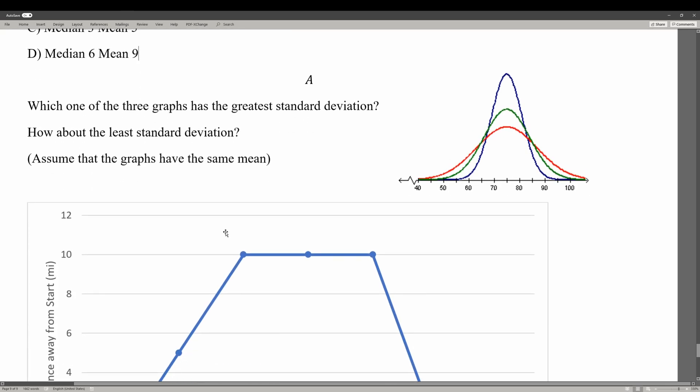Next we're going to talk about standard deviation. If we take a look at the right, which one of these colored graphs has the greatest standard deviation? These all have the same mean. Standard deviation refers to how many data points are outside or away from the mean. The greatest standard deviation would be the red graph, because it's more spread out away from the mean. In terms of the least standard deviation, the blue is going to be the one with the least standard deviation, because you can see a steeper hill towards the mean, which is around 75.